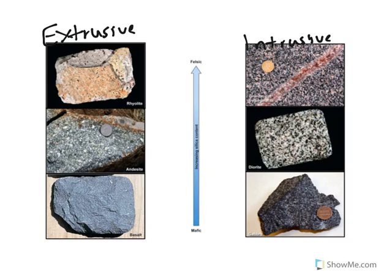A few moments ago you learned that we can break down our igneous rocks into two groups: our extrusive and our intrusive. You learned that our three most common extrusive rocks are rhyolite, andesite, and basalt — with basalt being mafic and rhyolite being felsic. And then our intrusives: we have gabbro, diorite, and granite.